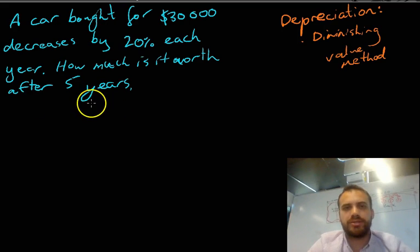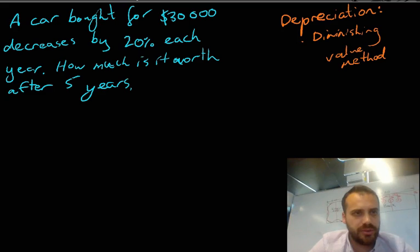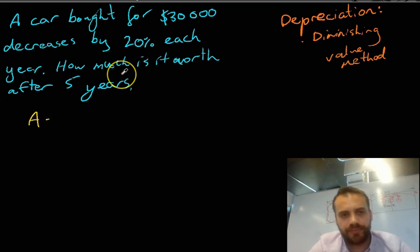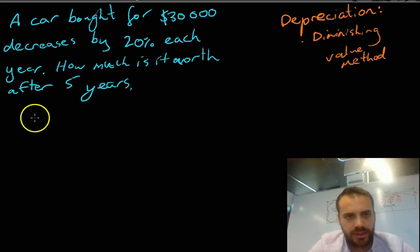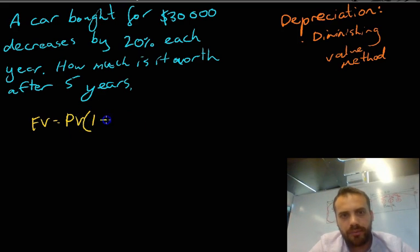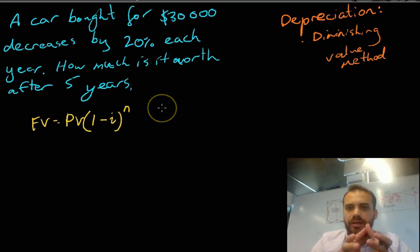So, this question is decreasing by the same percentage every year. So, we can still use our compound interest formula. So, let's use future value equals present value bracket 1 minus I to the power of N.